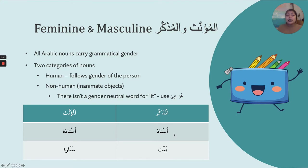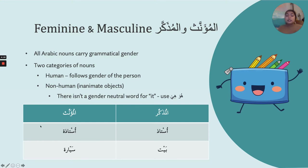So here's the word: ustad, meaning teacher, instructor, or professor. This is the masculine version — the category of al-mudakkar. But if I wanted to make that noun feminine — for instance, if I want to say 'Ana ustad' meaning I'm a teacher — I'm going to use the feminine version, ustadah, because that's how I identify. And notice we have the ta'marboota at the end.